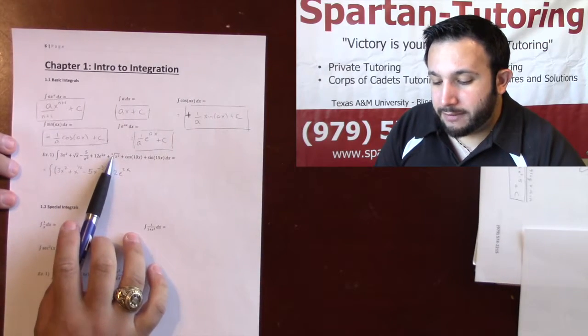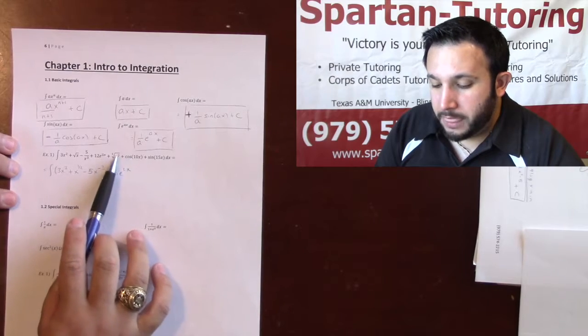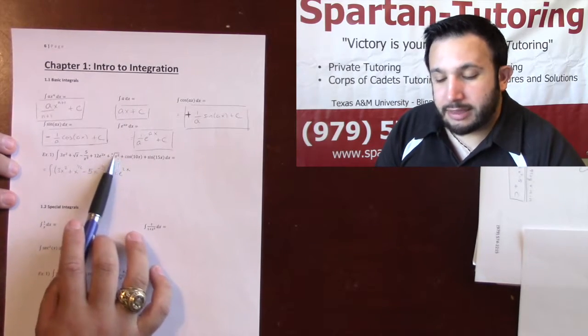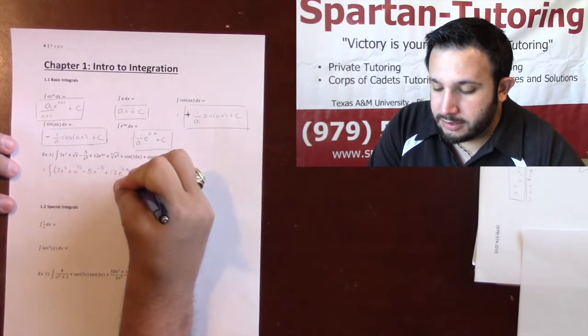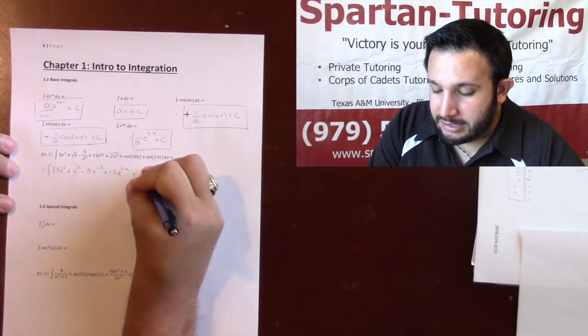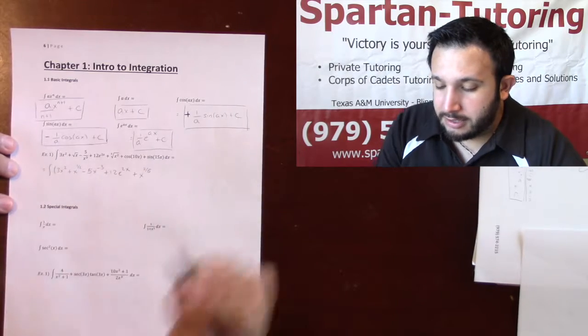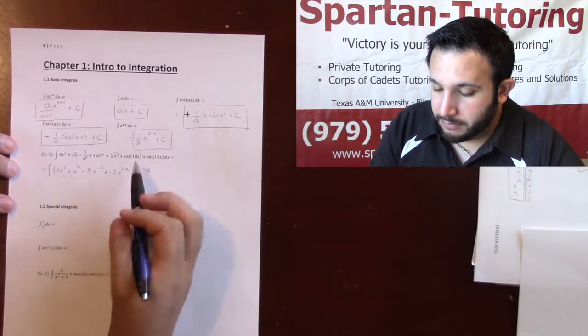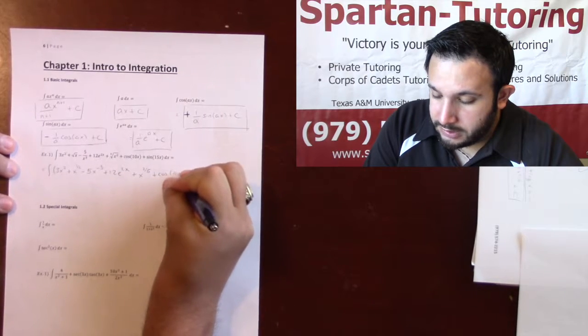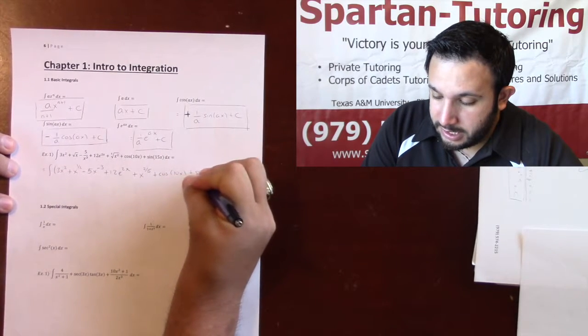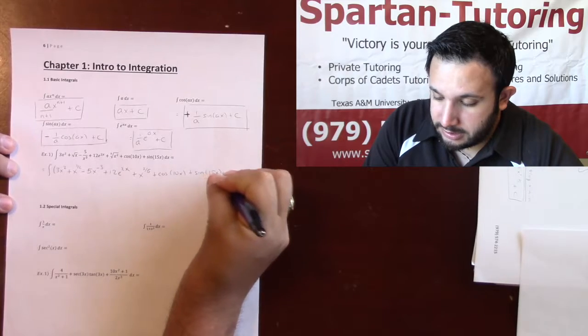Now, take a look at this. I have the fifth root of x squared. Whenever you have numbers on the inside and the outside of a radical, the way you algebraically rewrite this, it's always x raised to the inside over outside. So this is x to the 2 fifths. And the cosine and sine are fine. So plus cosine of 10x plus sine of 15x.